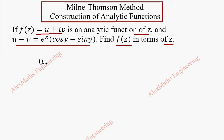So this becomes ux minus vx. Here we apply the product rule and take the partial derivative with respect to x. Since y is constant, the second term is fully constant. We differentiate only the first term e^x, and the second term stays as it is — no product rule needed since the other term would become 0. Let's keep this as the first equation.